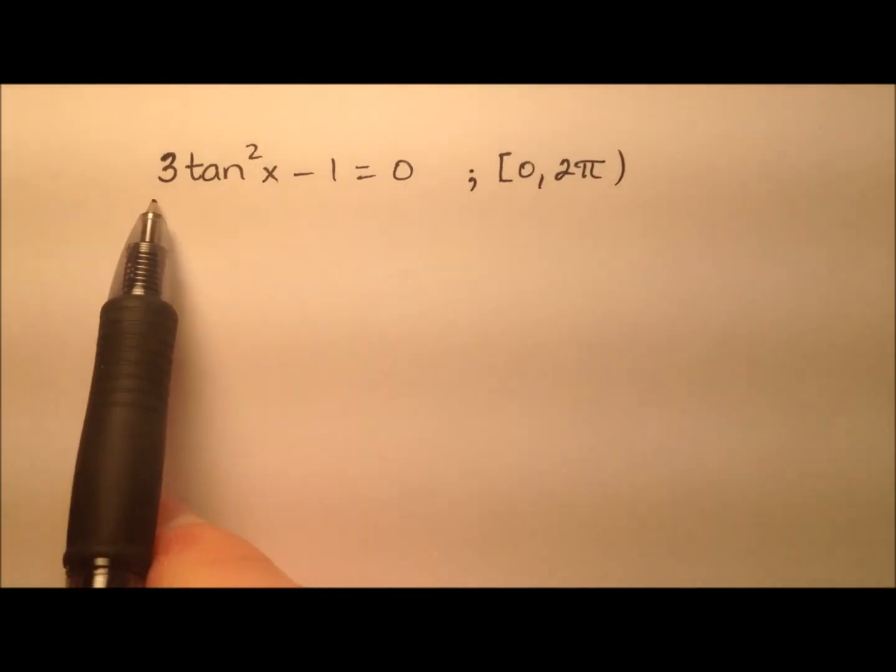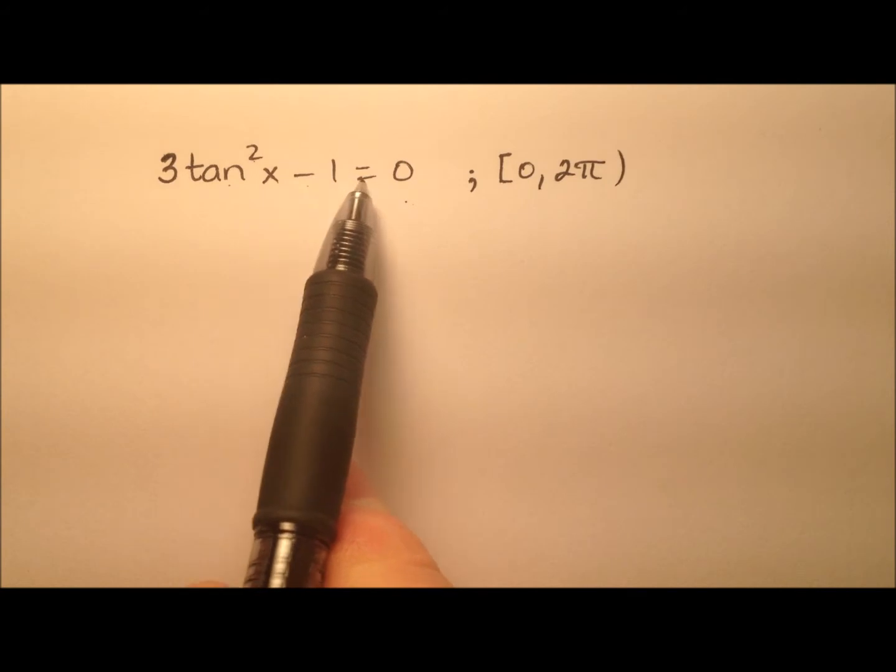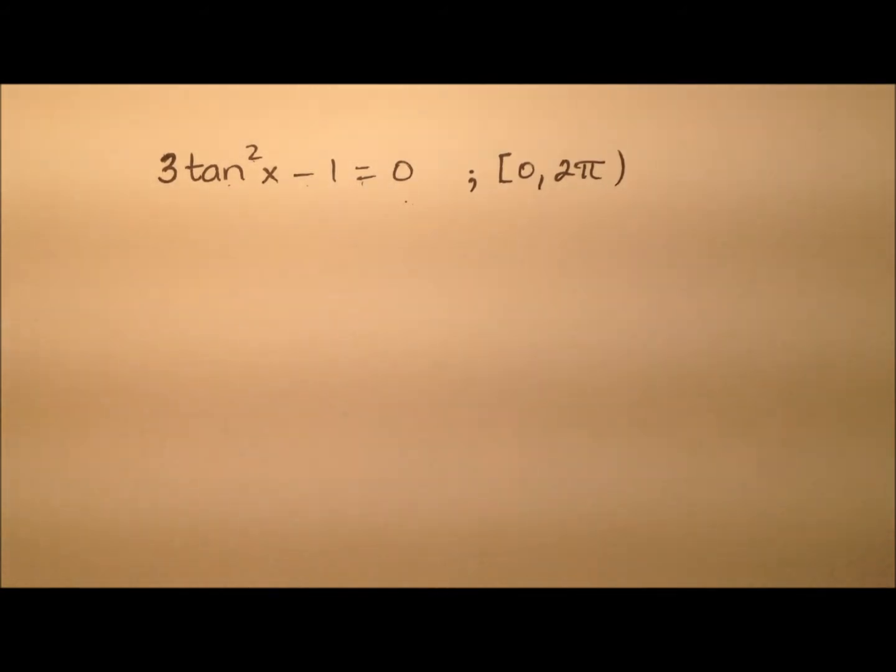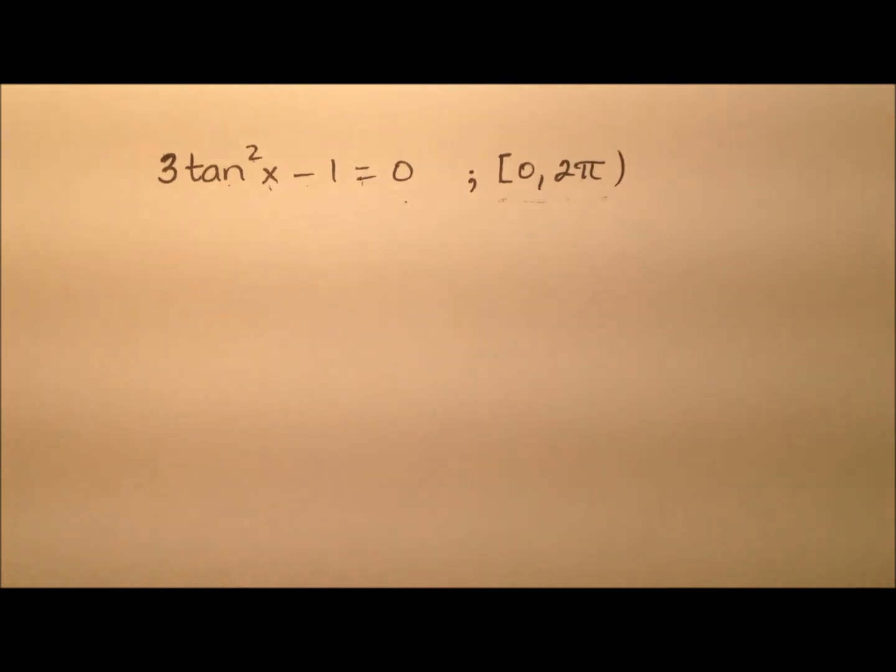In this example, looks like we have this trigonometric equation that we're going to solve. 3 tangent squared x minus 1 equals 0. And this value of x that we're going to be looking for will be in the interval 0 to 2 pi.